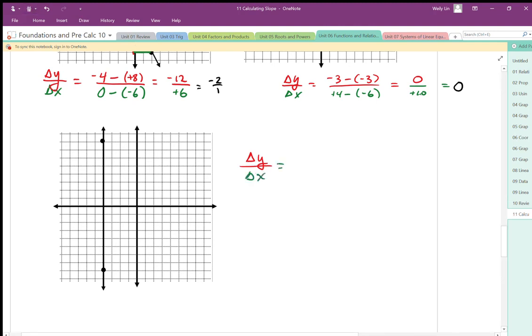So my change in y in this case is going to be—well, I can choose any two points on the line. Here, I happen to have chosen on the dots here, it looks like 3, 6, 8. So it's going to be positive 8 minus, looks like negative 8. So we have a rise of plus 16.